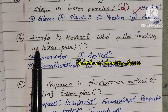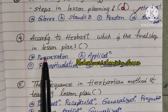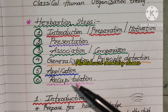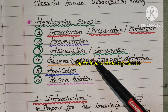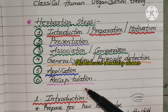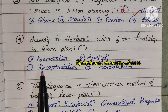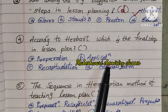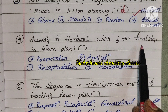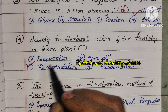Fourth question: According to Herbart, which is the final step in lesson plan? Herbart's steps are: Introduction, Presentation, Association, Generalization, Application, Recapitulation. The options are Preparation, Application, Recapitulation, Generalization. The final step is Recapitulation. Fourth one is C.